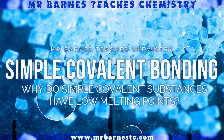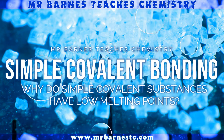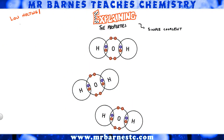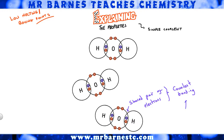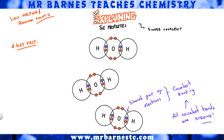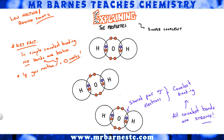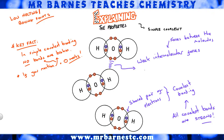Why do simple covalent compounds have low melting points? Every covalent compound has a shared pair of electrons, and every covalent bond is strong. The key thing to remember is we are NOT breaking those bonds — any time you mention that covalent bonds are broken, you will lose all marks. What we are breaking are the weak intermolecular forces — the weak forces between the molecules. They're really easy to break, so not much energy is needed. You get one mark for saying 'weak intermolecular forces between the molecules' and one mark for saying 'not much energy is needed to break them.'